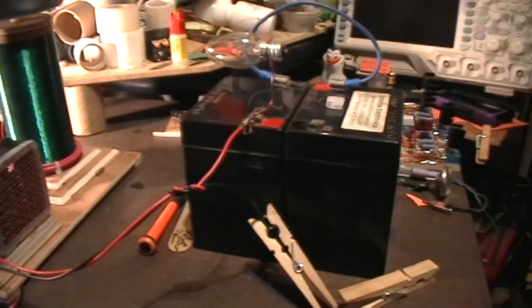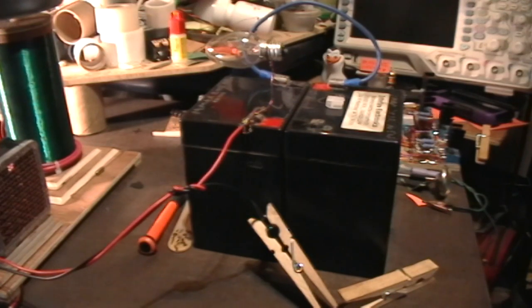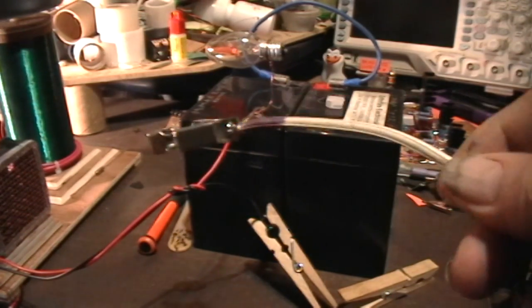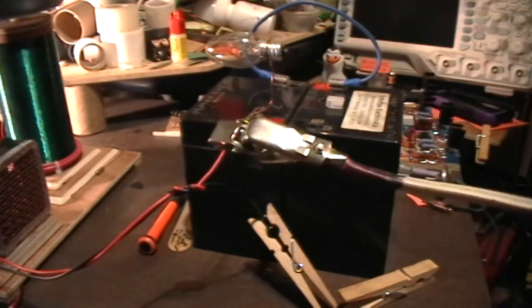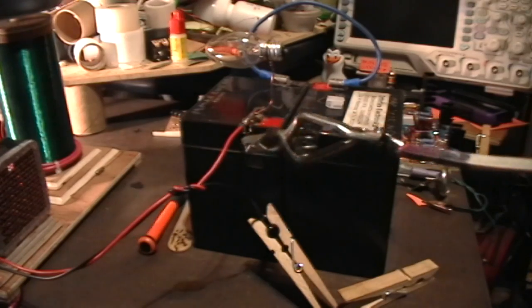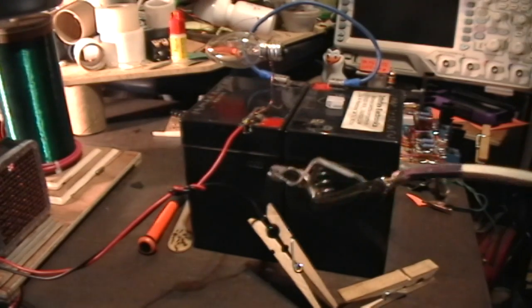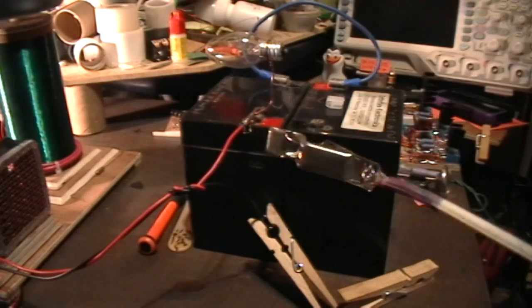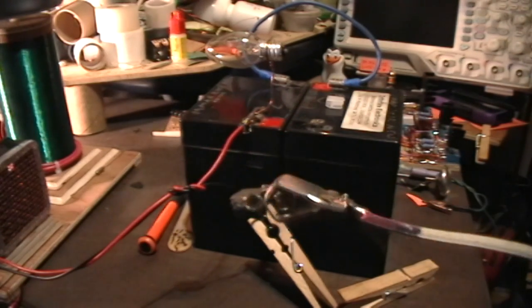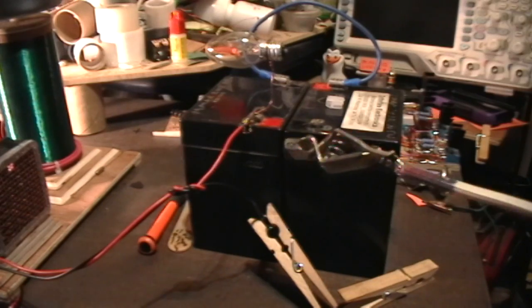And here is my ground clip. This wire is connected only to a copper pipe driven into the ground outside my window in an area that's kept moist by the drip from the air conditioner condensation drip.